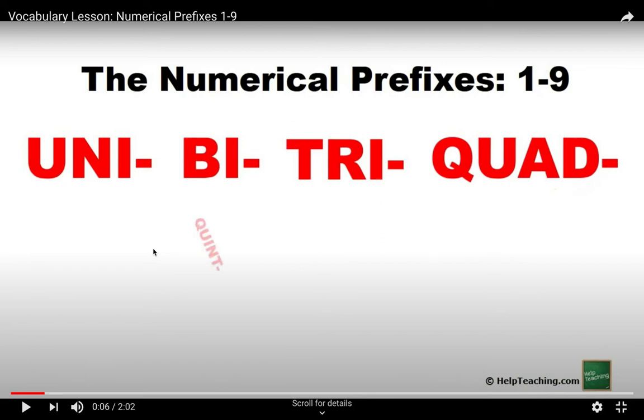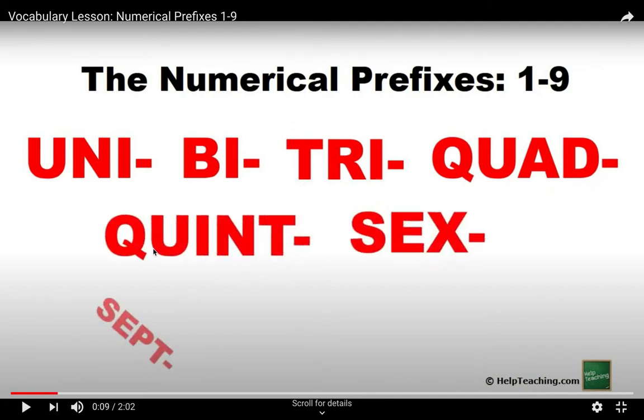Tri would be three wheels, tricycle. Quad would be four, like a quarter. Four quarters equal a dollar. Quint, then sex. Oh, I did say that word. But sex is not what you're thinking about. Sex in Latin means six. So quint would be five, sex would be six. Sept would be seven, oct is eight, and non is nine.